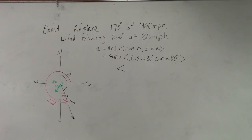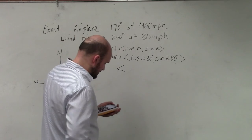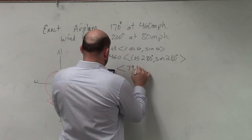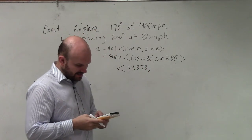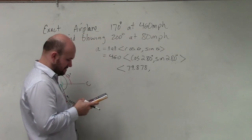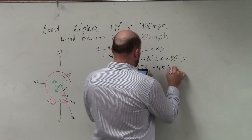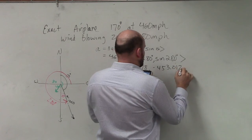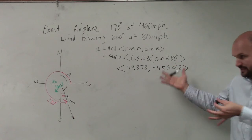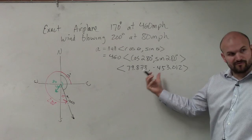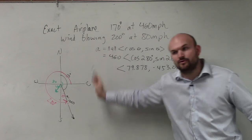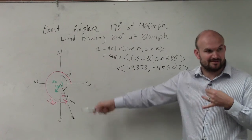So you just do the cosine of 280 times 460. Make sure your calculator is in degree mode. And you just type in cosine of 280 times 460. And I get 79.878. I'm going to round to the nearest thousandth. And then I do sine of 280 times 460. And I get negative 453.012. Now, let's look at this. Let's look at our picture. Does this look like the component form of this vector? We're going positive, and then we're going negative. How far to the right we did is much smaller than how far down we went. Does that kind of look about right?